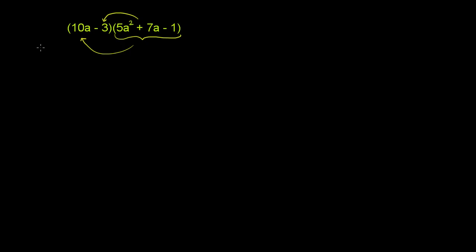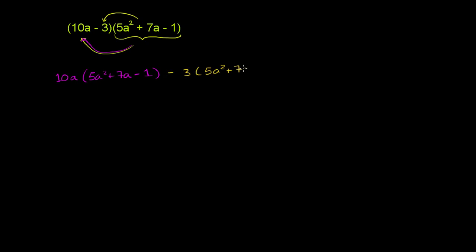So let's just do that. We have 10a times 5a squared plus 7a minus 1 — that's that right over here. And then we have minus 3 times 5a squared plus 7a minus 1, and that is this distribution right over here.